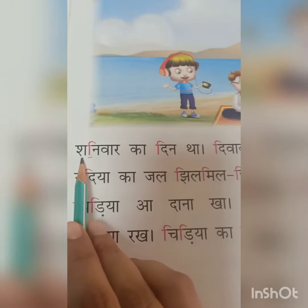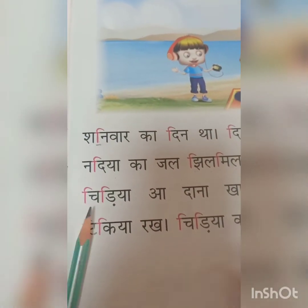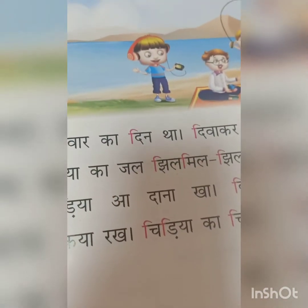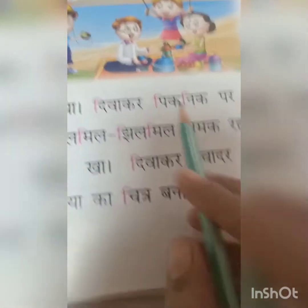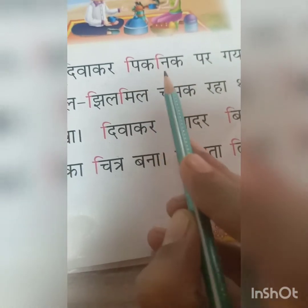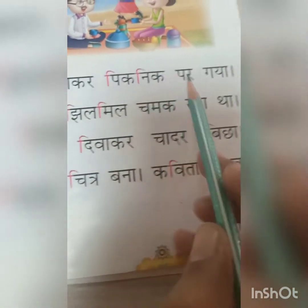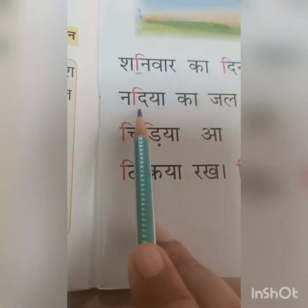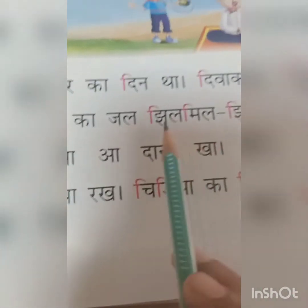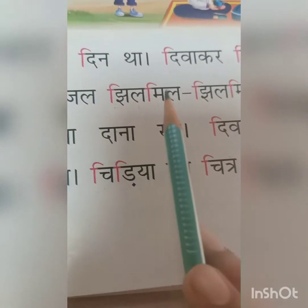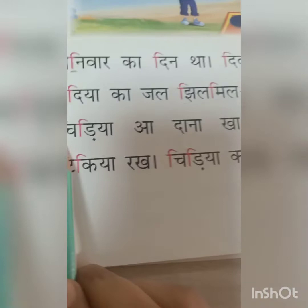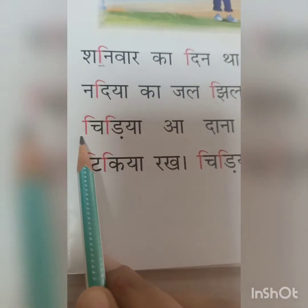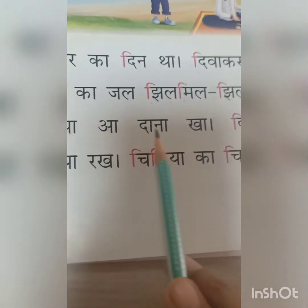So let's read a short story — picnic. Shanishnivar ka din tha. Didi va kar — divakar — piknik pai — pika piknik par gaya — nadiya — nadiya ka jal — jhail. Jila jilmila jilmil jilmil chmak raha tha. Chidiya chidiya diya — chidiya — and dana kha.